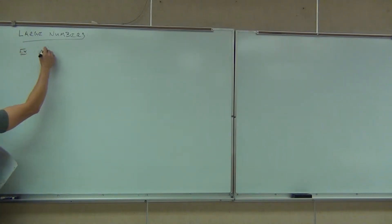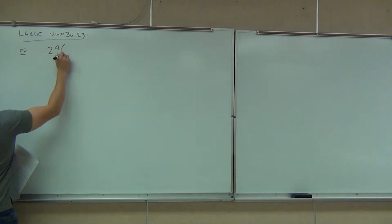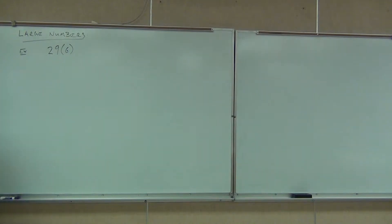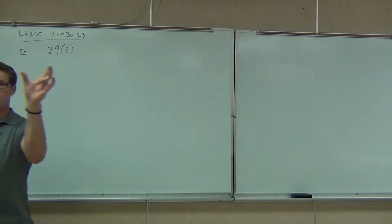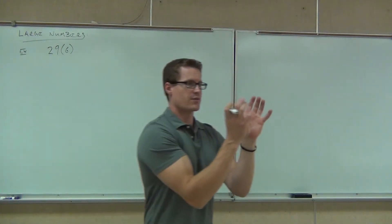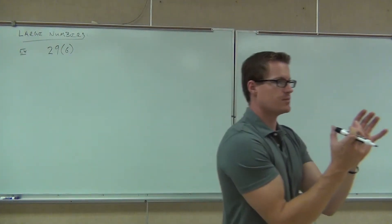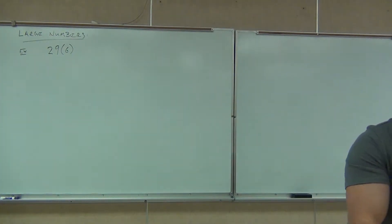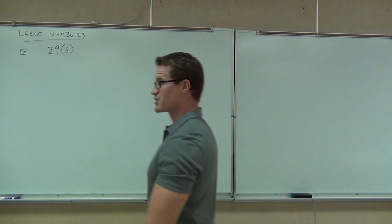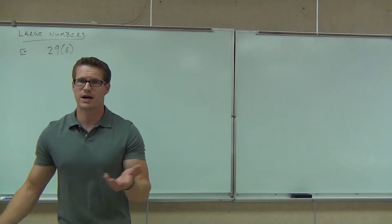By the way, do you remember what parentheses mean? They mean 'do this first' — if there's an operation inside. If there's no operation inside, then whatever number is outside means you are multiplying. So this really just means 29 times 6.